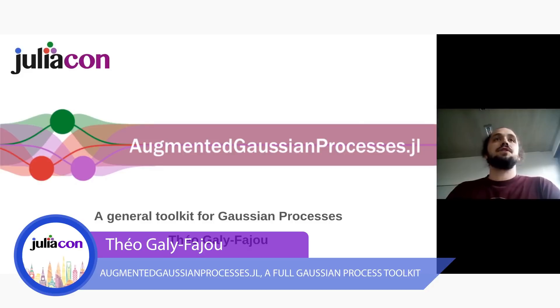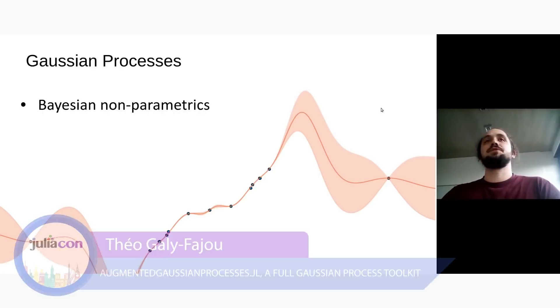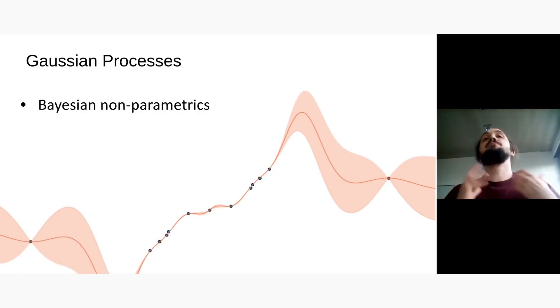So first, what are Gaussian processes? Well, there are a certain class of models among Bayesian non-parametric models which help us to model any kind of function we want in a Bayesian setting.